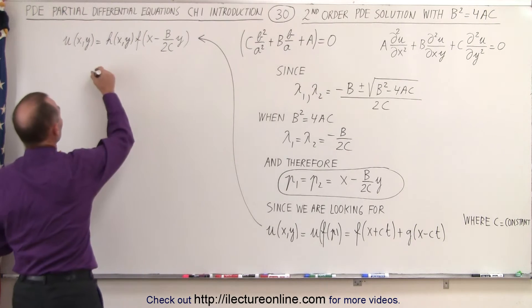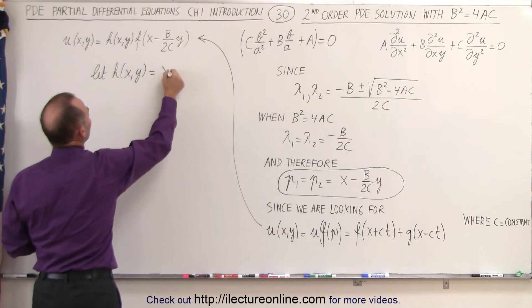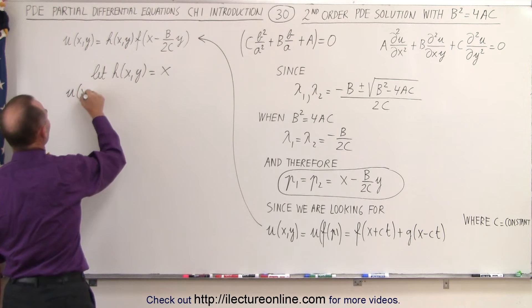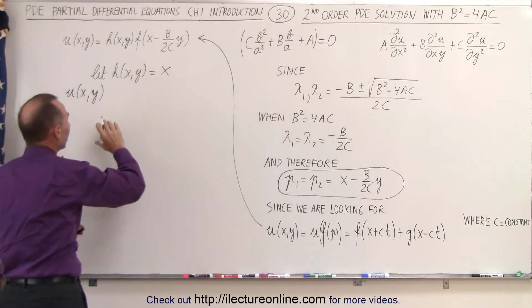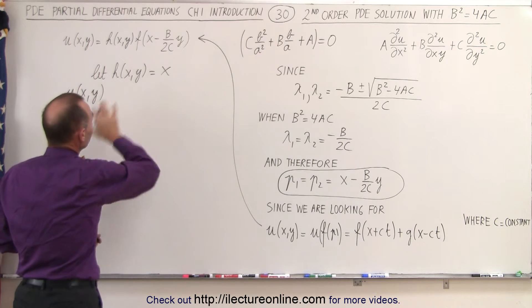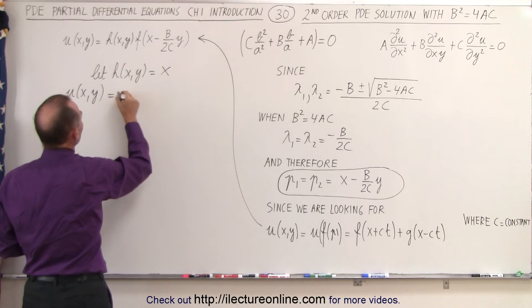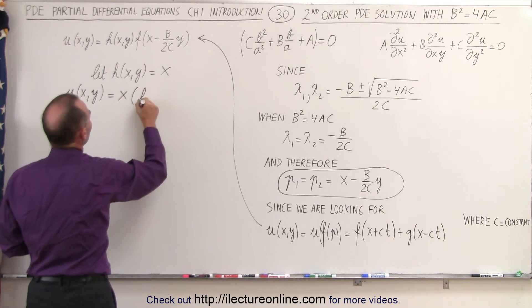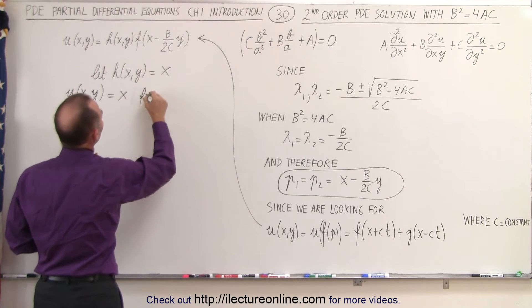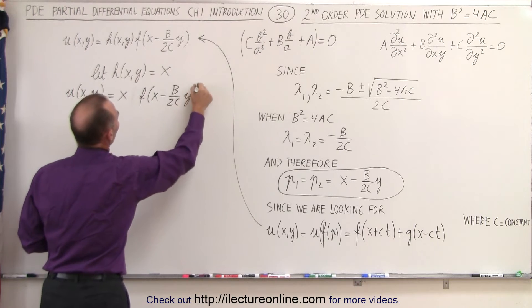Let's just simply go, let h of x and y simply equal to x. If we do that, the equation becomes as follows. u of x, y, and of course I realize there's more than one possible solution, but let's take the simplest non-trivial solution: let h equals x. So this becomes x times f of x minus b over 2c times y.